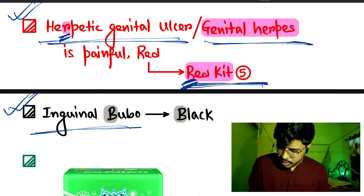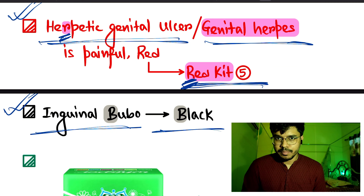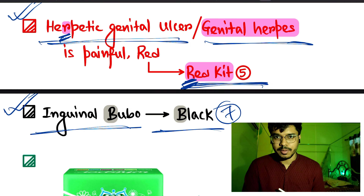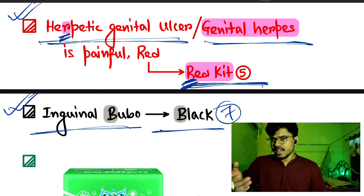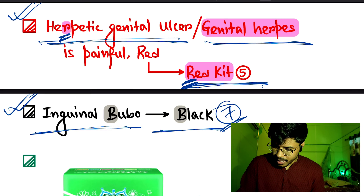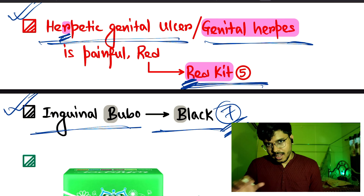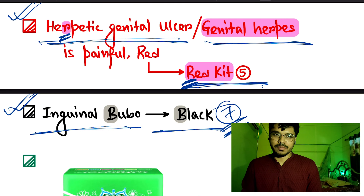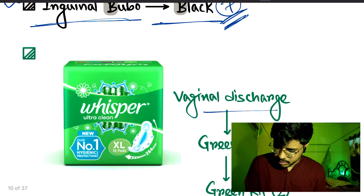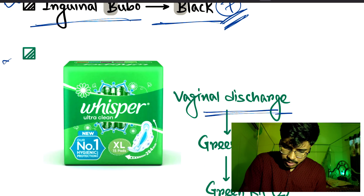Inguinal bubo uses the black kit, which is kit number seven. To remember this, black color means end of the list — there are seven kits, so black is at the end, meaning kit number seven. Black kit is for inguinal bubo.